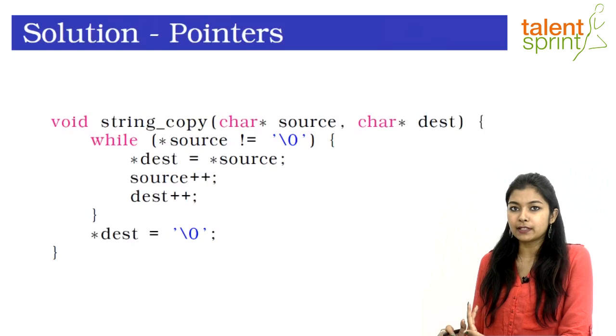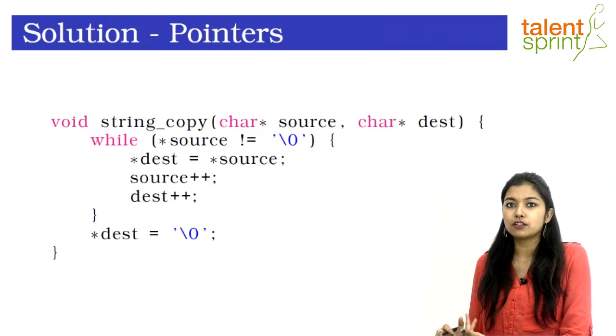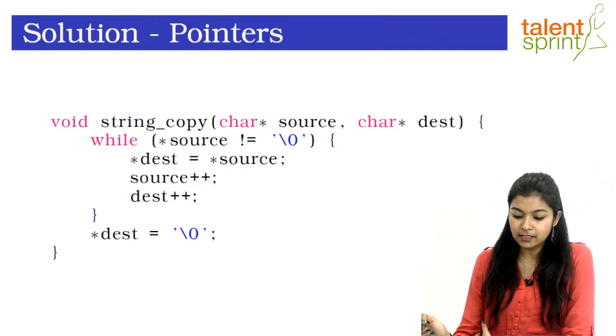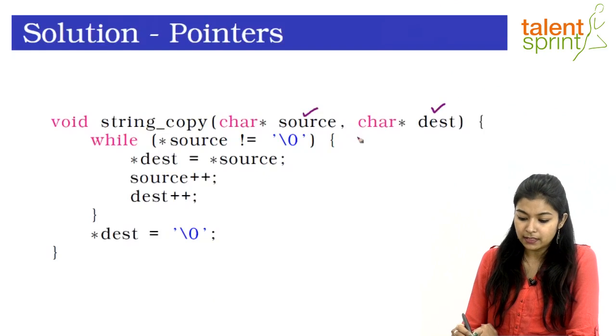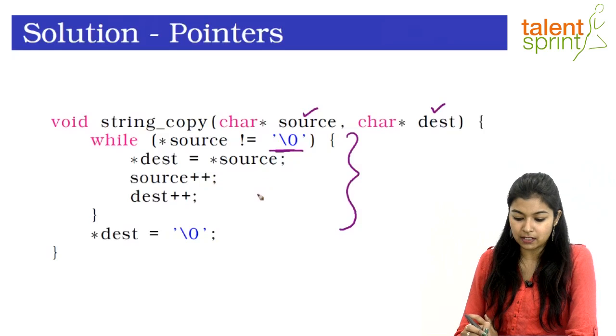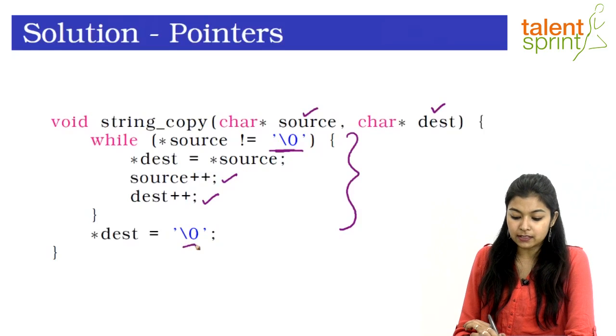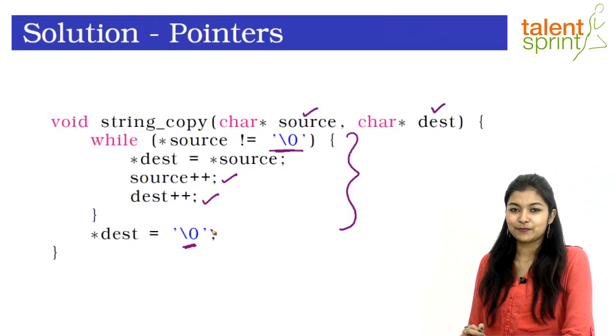Now let's see how to achieve the same result using pointers. The pointer approach remains almost the same — it's just that instead of passing arrays you pass pointers to the function. As shown in the slide, we pass a pointer to source and a pointer to destination. With pointers we don't need a separate traversal variable; we simply increment the pointer to point to the next location in every iteration. Inside the while loop, which runs until the end of source is reached, we move each character to the destination and increment both pointers. When the loop completes we add the null terminator at the end — fairly simple again.